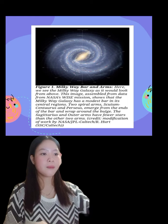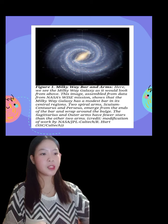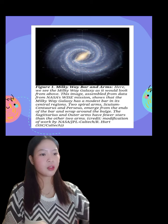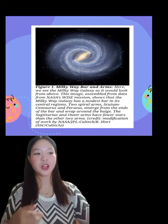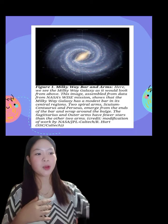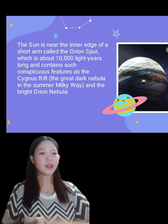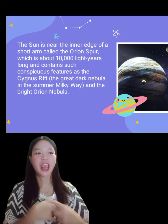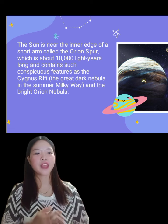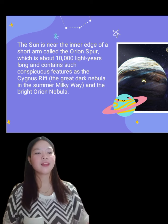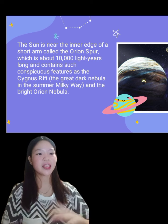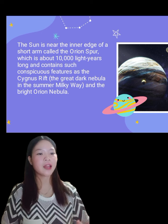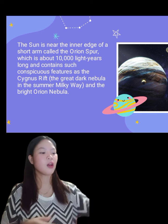This is the Milky Way galaxy bar and arms as we see in the illustration. This image, assembled from data from NASA's WISE mission, shows that the Milky Way galaxy has a modest bar in its central regions. The sun is near the inner edge of a short arm called the Orion's bar, which is about 10,000 light years long and contains such conspicuous features as the Cygnus Rift, or the Great Dark Nebula in the Summer Milky Way, and the Bright Orion Nebula.